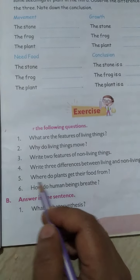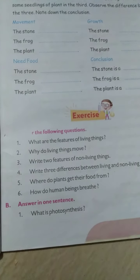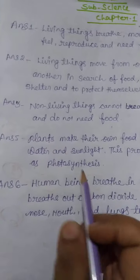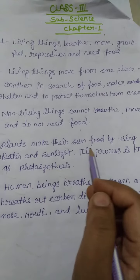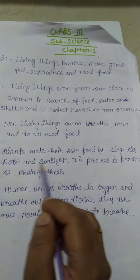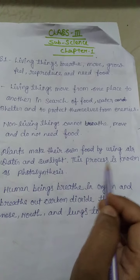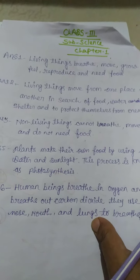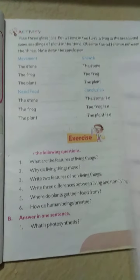Question number 5. Where do plants get their food from? Answer number 5: Plants make their own food by using air, water and sunlight. This process is known as photosynthesis.